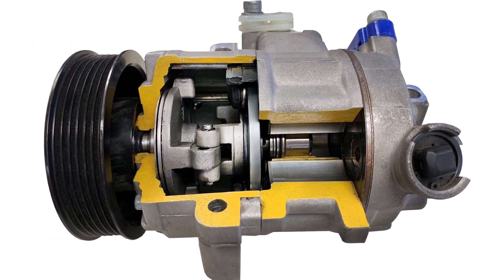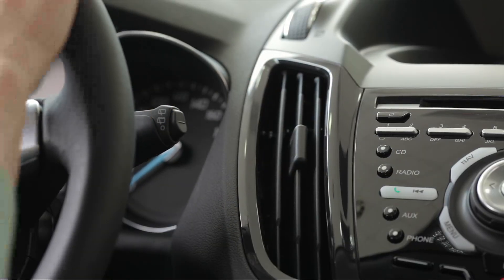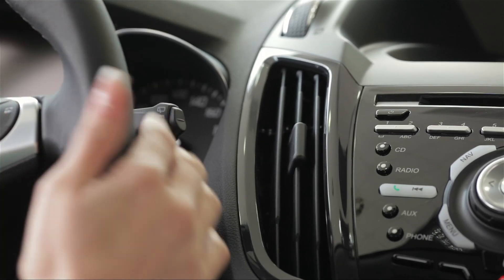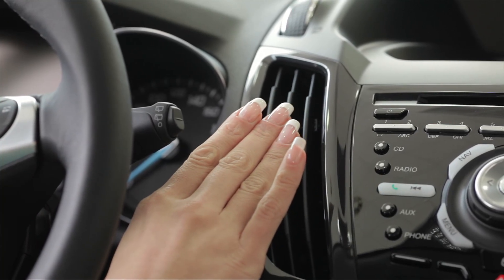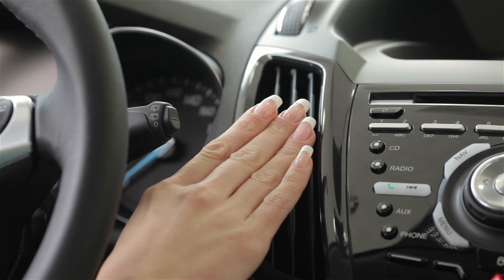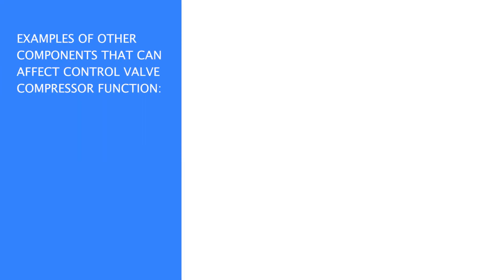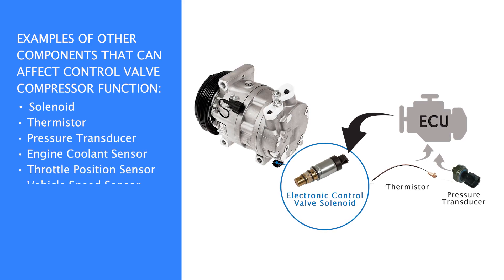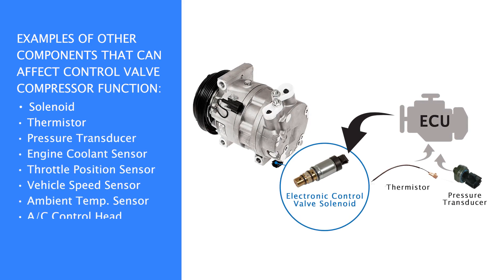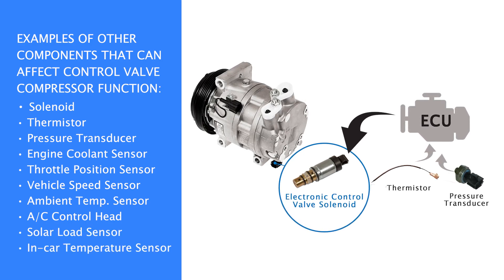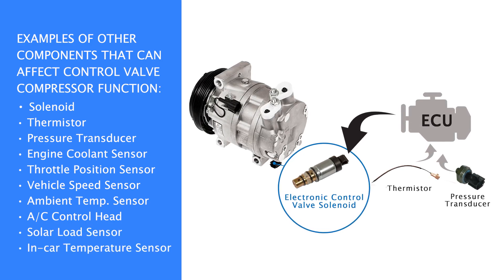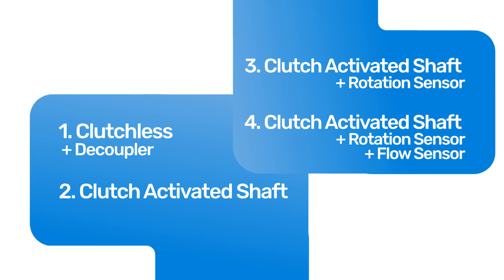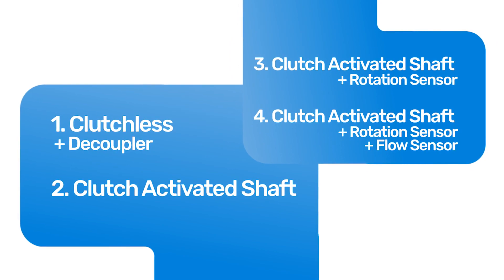Compared to a traditional compressor style, control valve compressors will not pump if turned by hand. They may also appear to have a one to two minute delayed start. The addition of electronic components means the ECU has to receive input and translate appropriate settings before the compressor begins pumping. Some systems can have over 20 required inputs prior to compressor activation. Interrelated sensor types and inputs will vary by vehicle design. Today we will take a look at four common designs. All control valve compressors will feature a control solenoid.